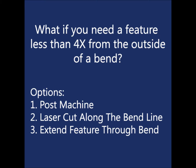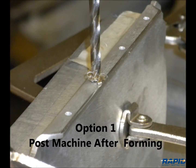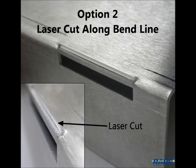In that case, there are ways to have a feature close to the bend, but it may require design compromises or additional cost. One option is to post machine a part after forming. For example, a hole can be made smaller before forming and then post drilled to size. Note that rectangular openings are subject to the laws of machining — you cannot machine a square corner. Post machining can add significant cost to a part.